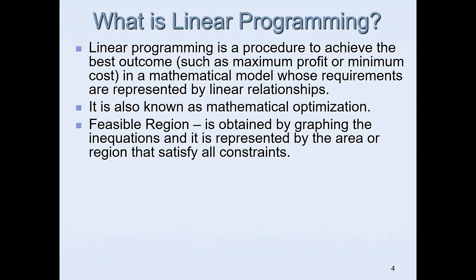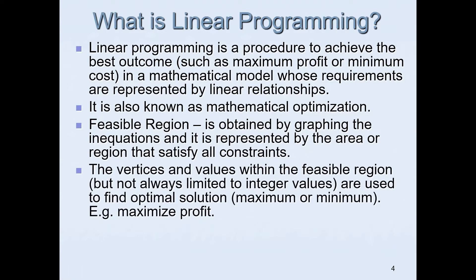We'll be using the linear programming processes to find the feasible region. The feasible region is obtained by graphing the inequations and is represented by the area or region that satisfies all constraints. These constraints are the restrictions, so we will be using inequalities to represent them. The vertices and values within the feasible region — not always limited to integer values — are used to find the optimal solution.